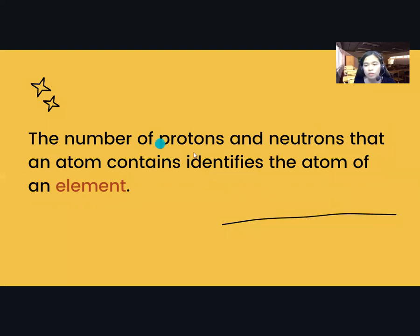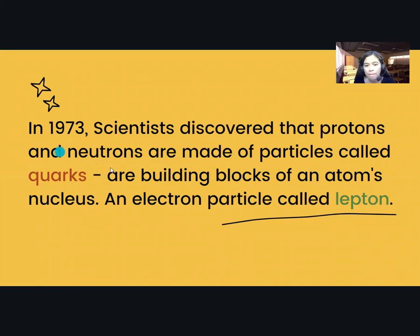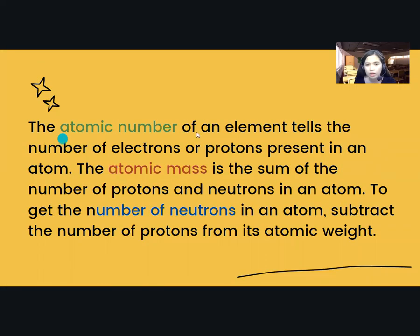The number of protons and neutrons that an atom contains identifies the atom of an element. The atomic number of an element tells the number of electrons or protons present in an atom. The atomic mass is the sum of the number of protons and neutrons in an atom. To get the number of neutrons in an atom, subtract the number of protons from its atomic weight.